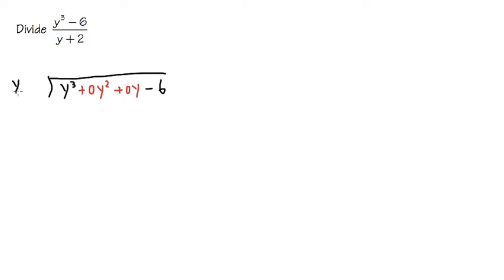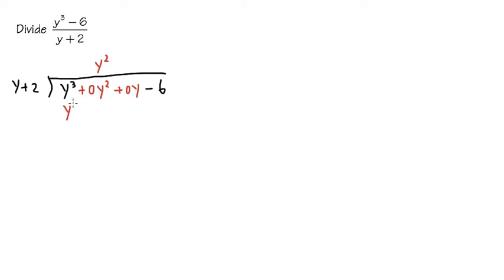The y plus 2 will be on the outside. Now we go ahead and divide, paying attention to the first terms. We ask: what times y gives us y to the third power? Since y times y squared equals y cubed, I need y squared. I line that up with the y squared column. Then I take y squared times y to get y cubed, and also y squared times positive 2 to get plus 2y squared. All the y squared terms should be lined up — this keeps everything organized.